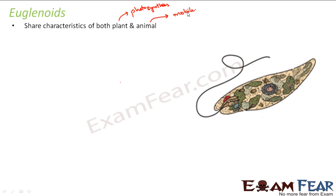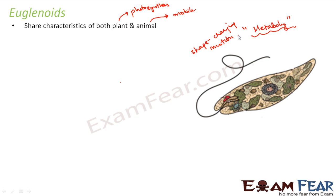Another thing about the motion of Euglena: during its movement with the help of flagella, the shape of the Euglena changes. This shape-changing motion is known as metabolic. So the shape-changing motion of Euglena is termed metabolic — a special movement shown only by Euglena.